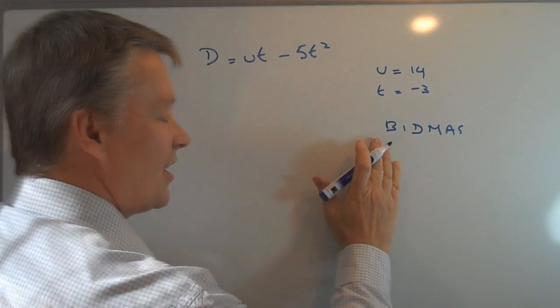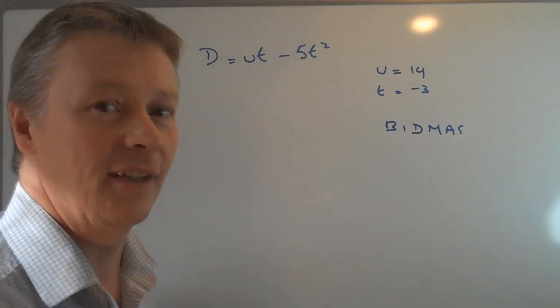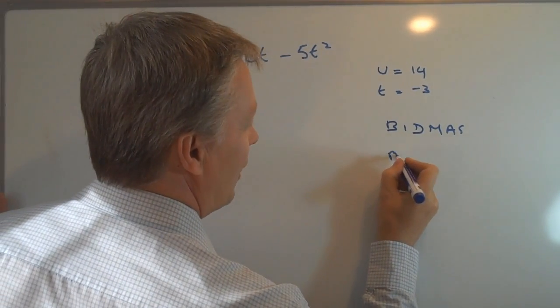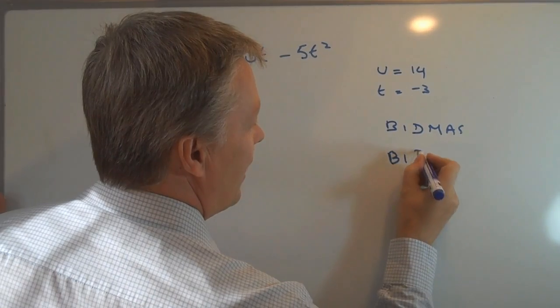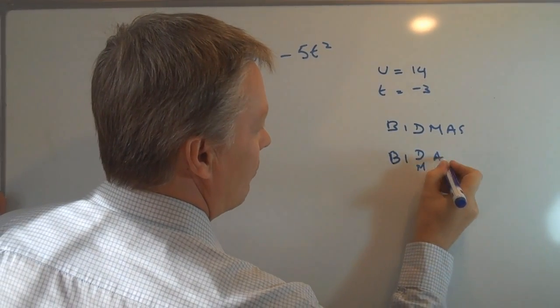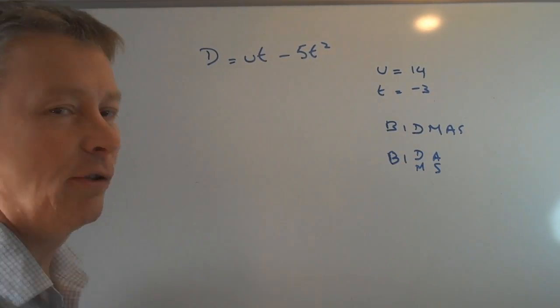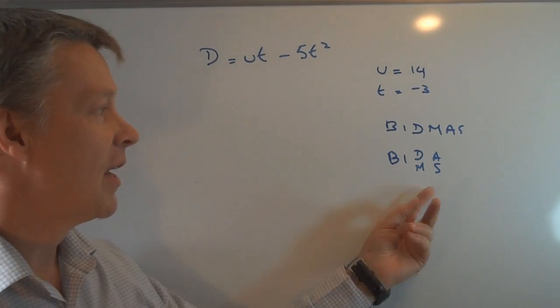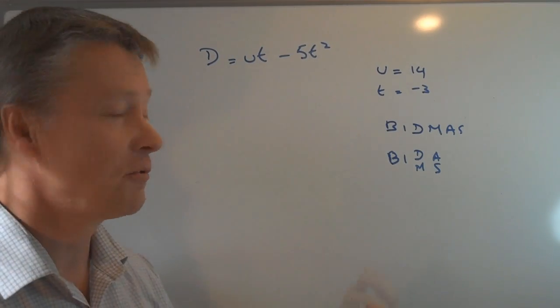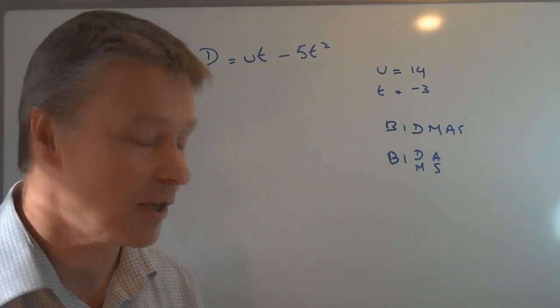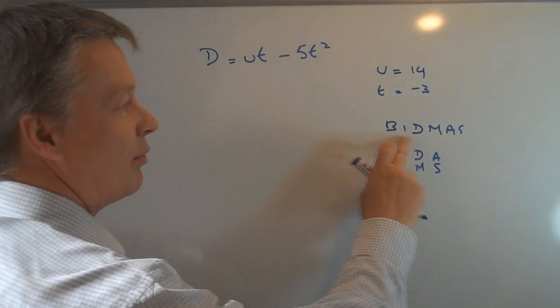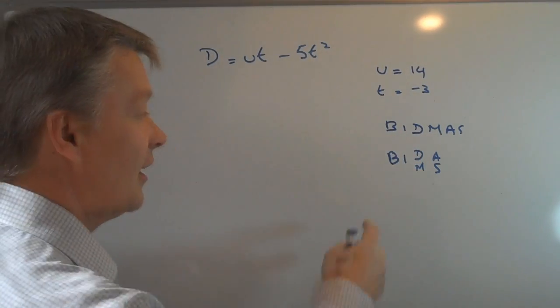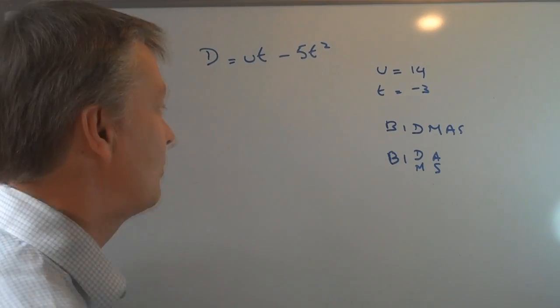And what it is is the order of operations. It's not entirely true to write it like that. It is actually a little bit better to write it with division and multiplication grouped together, and addition and subtraction grouped together. The reason we do that is because division and multiplication should be carried out at the same time, and addition and subtraction should be carried out at the same time. Division doesn't come before multiplication. It comes together with multiplication.